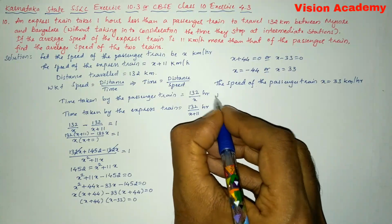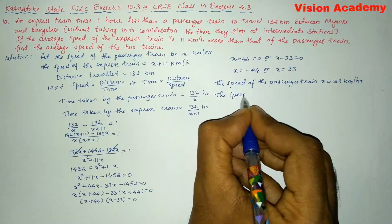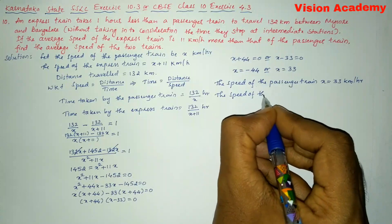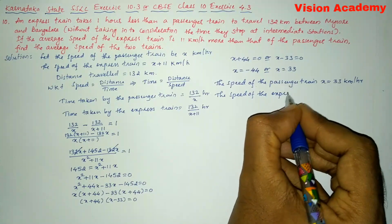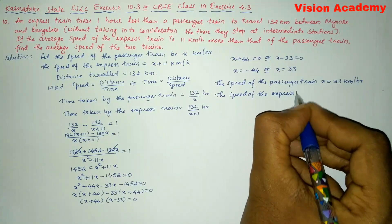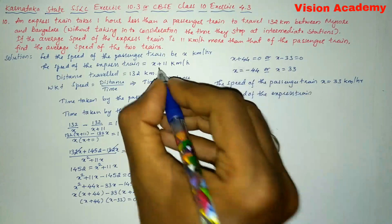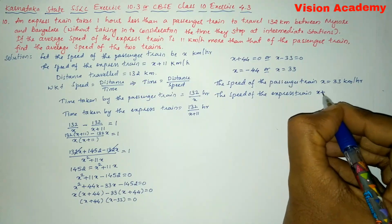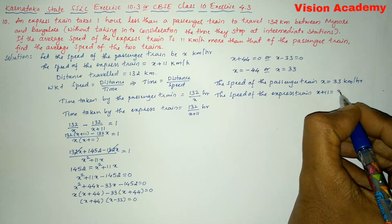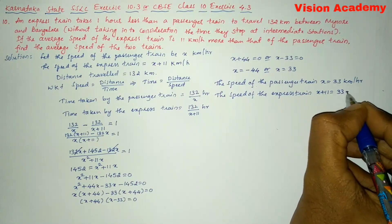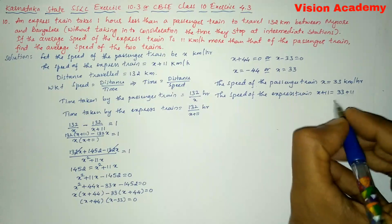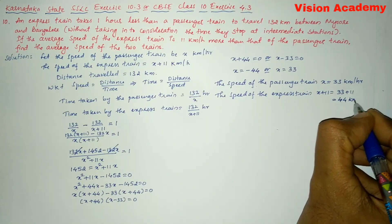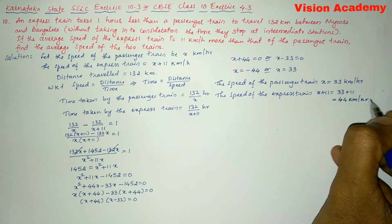Now we find the speed of the express train, which is x plus 11. Substituting x equals 33: 33 plus 11 equals 44 kilometers per hour. So the speed of the express train is 44 kilometers per hour.